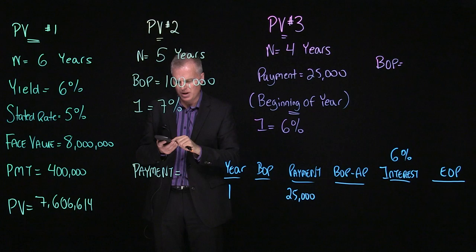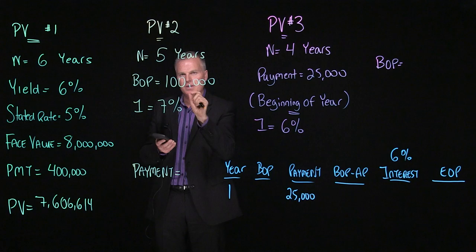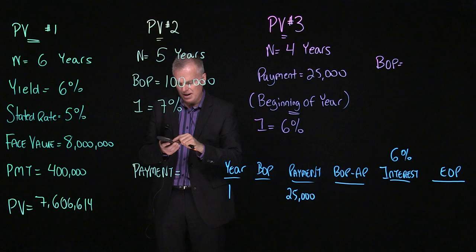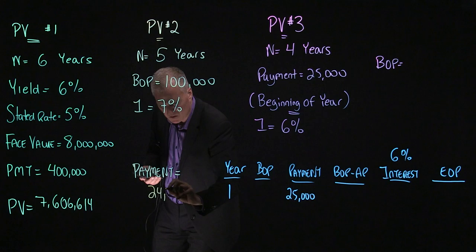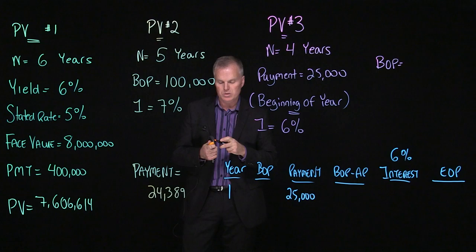And then I'm going to hit compute payment. And that will give you my payment number of $24,389. So we're doing great.